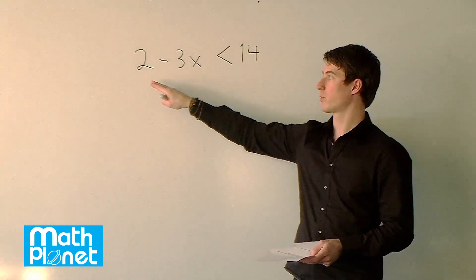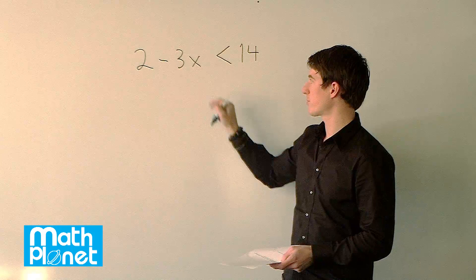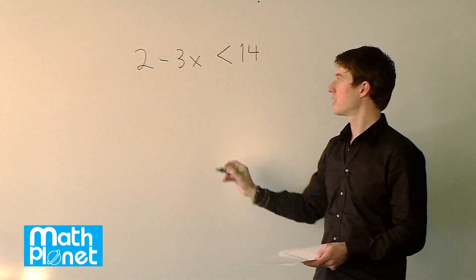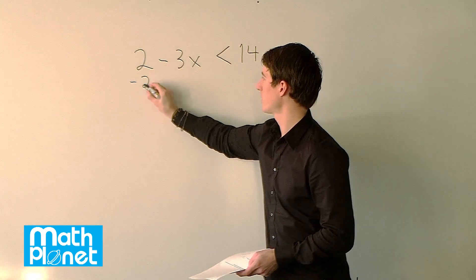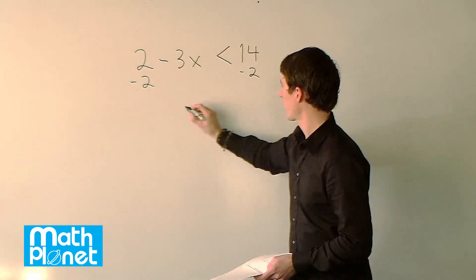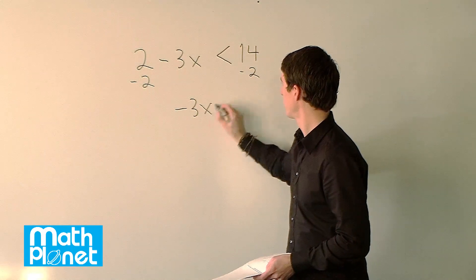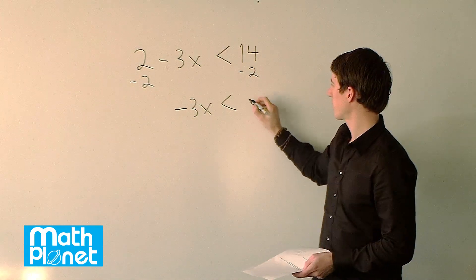We can start by just doing what we normally do with any equation: get the x's by themselves and the numbers on the other side. So we'll subtract 2 from both sides. So we have negative 3x is less than 14 minus 2, which is 12.